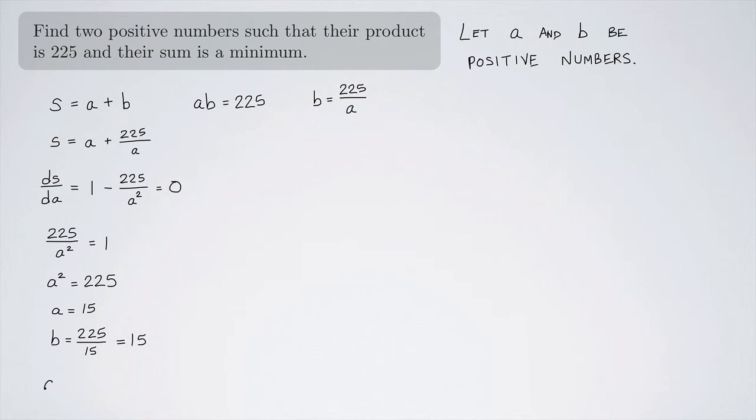So my two numbers are A equals 15 and B equals 15. Their sum, in this case, would be 30.